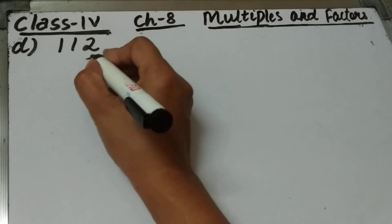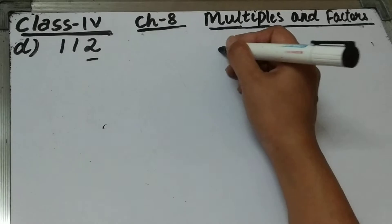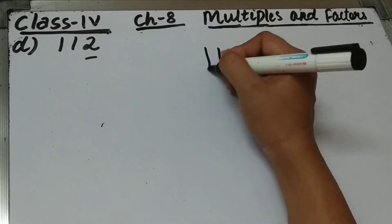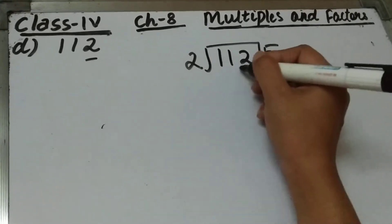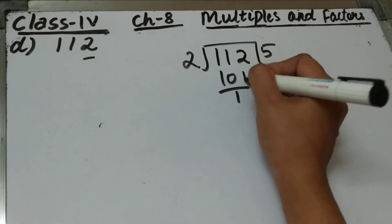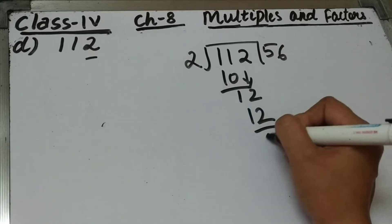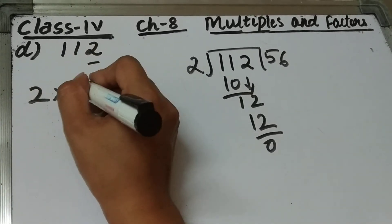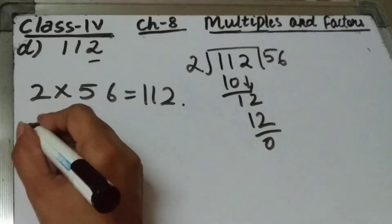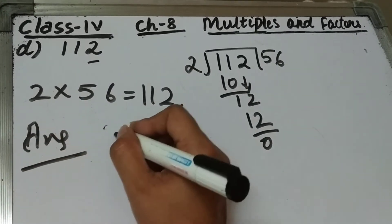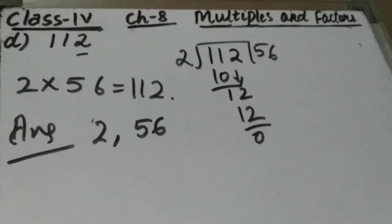Part D is 112. The 1's place is 2, this is an even number, so it is divisible by 2. 2 fives are 10, bring this 2 down, 2 sixes are 12, remainder 0. So 2 times 56 is 112. The 2 factors of 112 are 2 and 56.